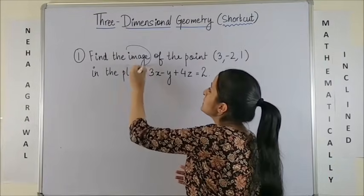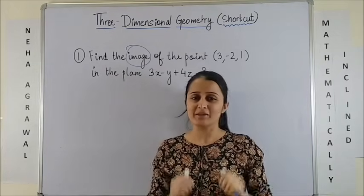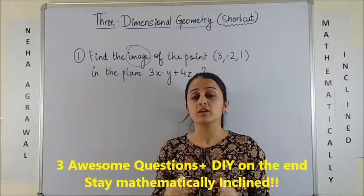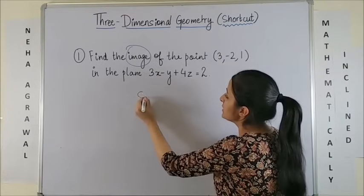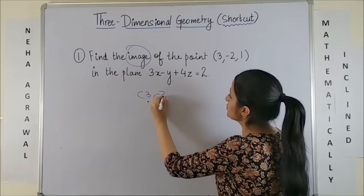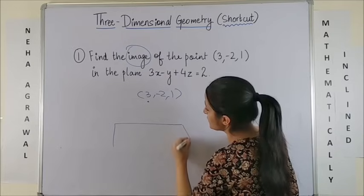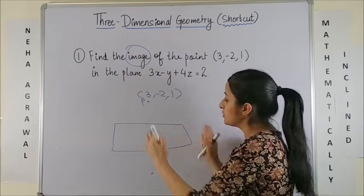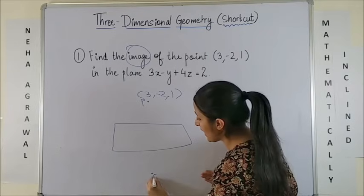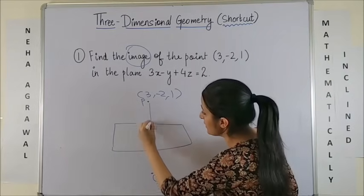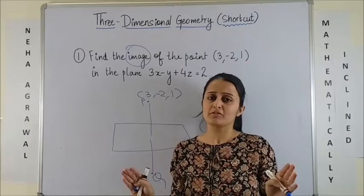Finding the image of the point in the given plane is a very common question in 3D geometry. Going by the traditional method, if you are given a point, say (3, -2, 1), and you are given any plane whose equation is available, you have to basically treat this plane as a mirror and find its image which would be equidistant. The traditional method takes really long to solve.